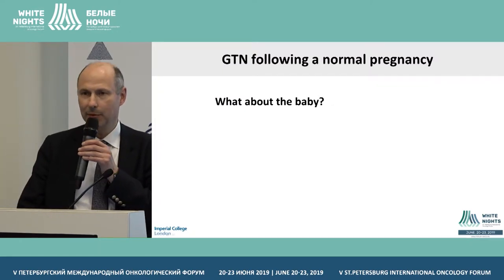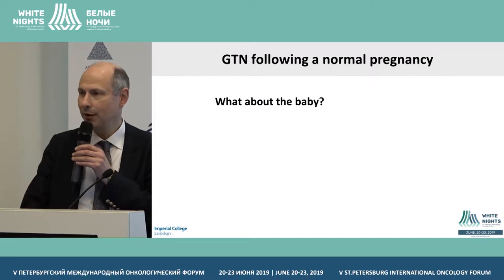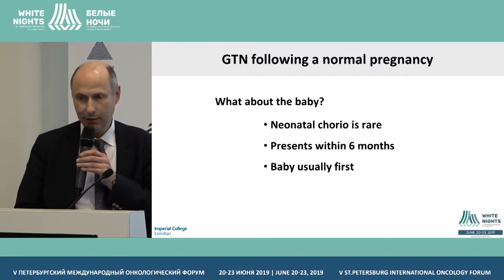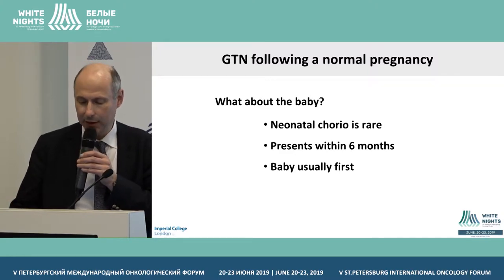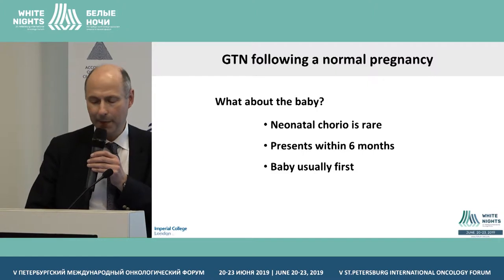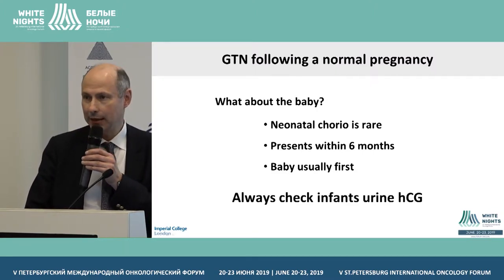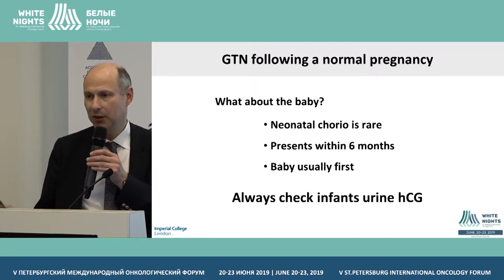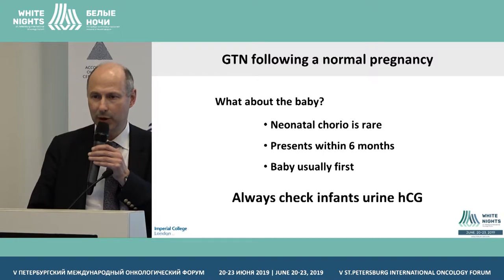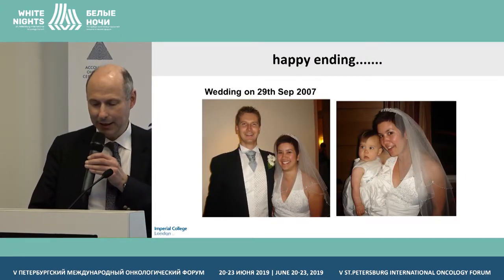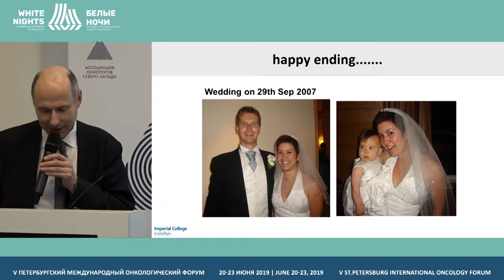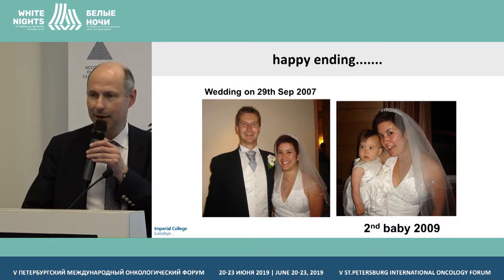What about the baby? Neonatal choriocarcinoma is rare, but it can cross into the baby. It typically presents within six months, usually in the baby before the mother. Always check the infant's urine HCG. We do it once; if normal we don't want to worry the parents but say: if there's a problem, baby failing to thrive, please bring the baby back and we'll recheck. Happy ending - she got married some months later, and a couple of years later she had another baby.